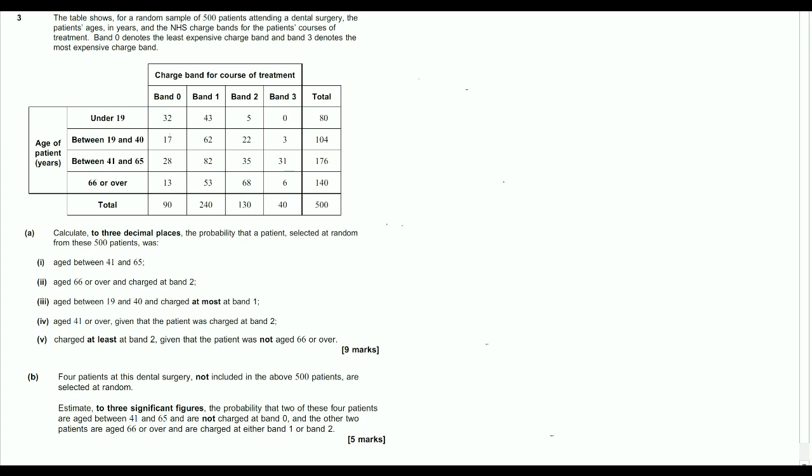Okay, so with part B then, first thing to notice is that they're put in bold in the question that the 4 patients at the dental surgery are not included in the 500. So what this means is that we're not going to be taking a patient out of our given 500 people. And what that means is that we're not going to have the situation where the denominator decreases. We're just looking at some other people using this table as a sort of relative frequency. So estimate the probability that two of these four patients are aged between 41 and 65 and not in band zero.